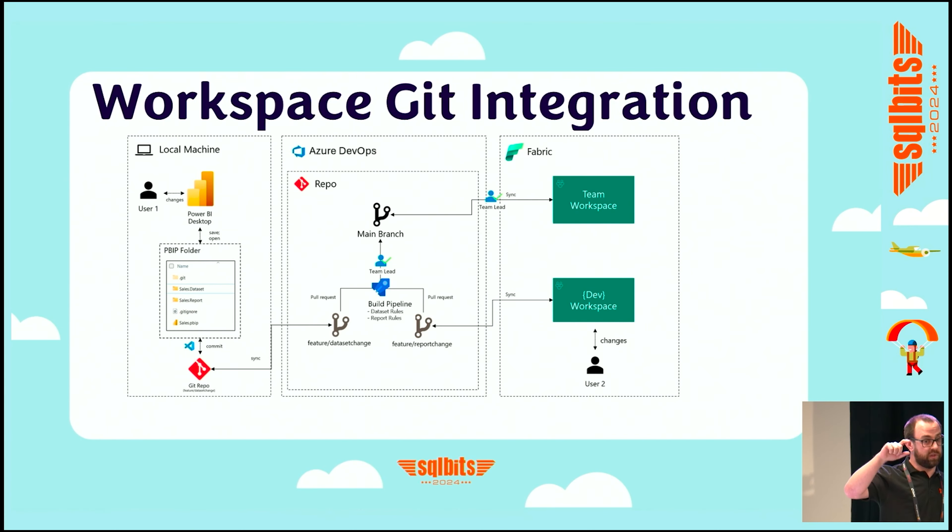There's a question at the back: do we have a date for when PBIP is due to come out of preview? I don't know, I couldn't say, sorry. Another question: will PBIP be for Pro or do you need Premium? If you want to do the workspace integration with Git, then that is a premium or Fabric feature. If you want to just use Power BI Desktop and save the files, that's local to the client — you don't need a premium license to do PBIP within Power BI Desktop. So the version control within the service is premium?